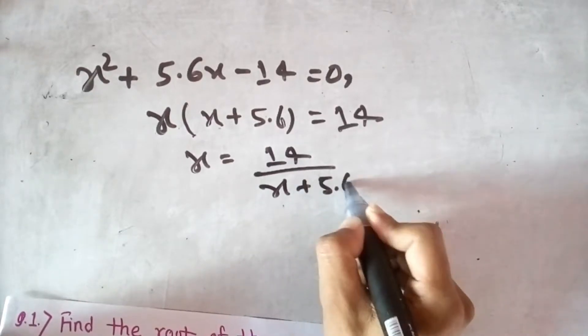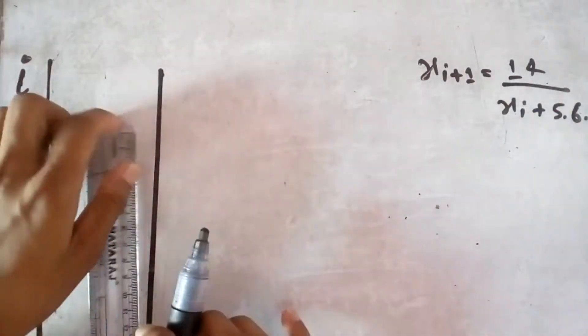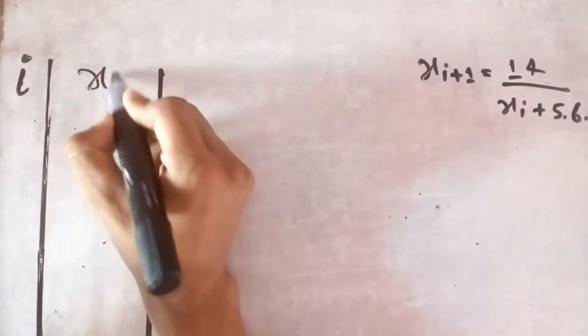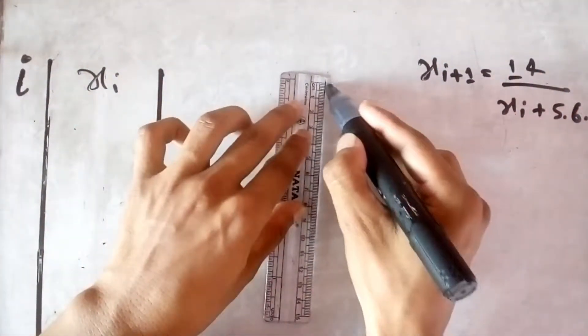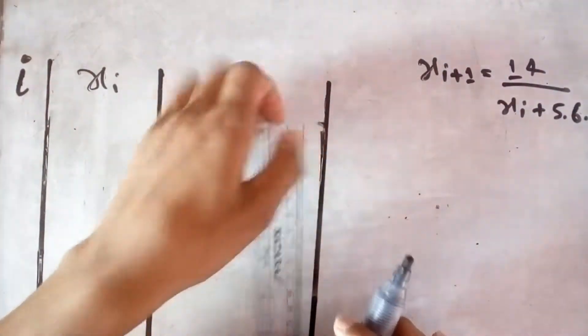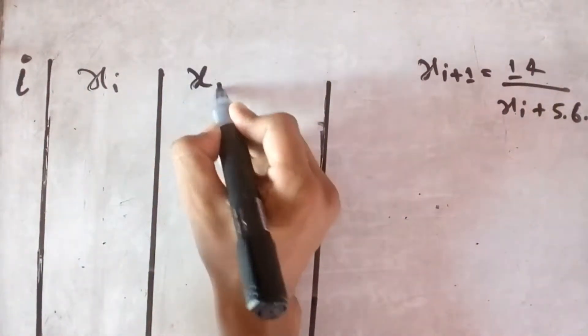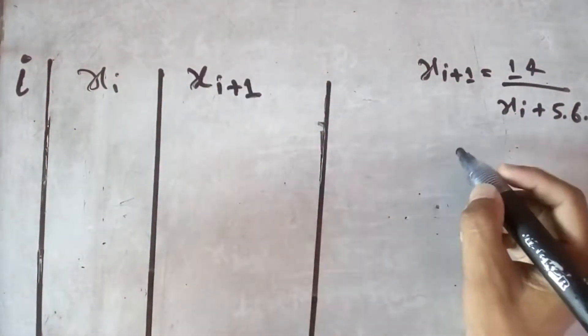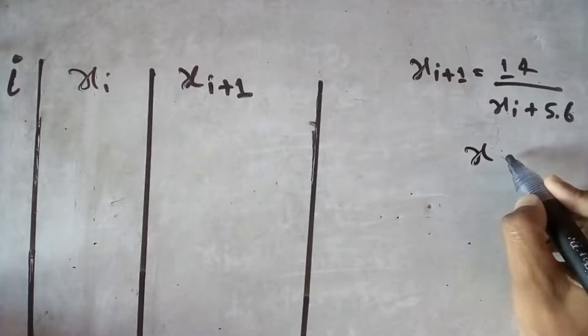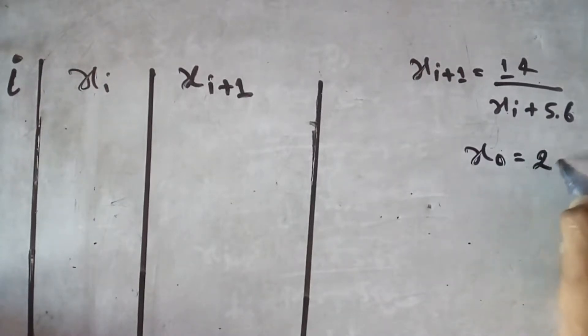Therefore x equal to 14 divided by x plus 5.6. This is for xi and this is for xi plus 1. Assume x0 equal to 2.